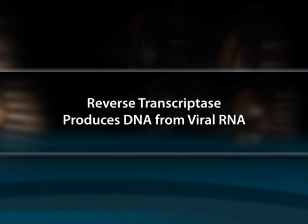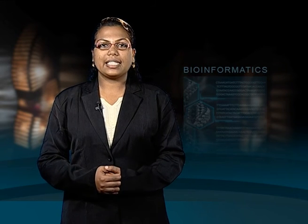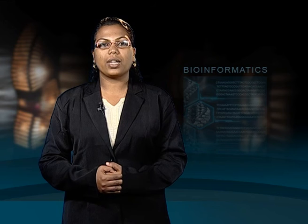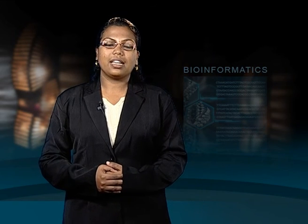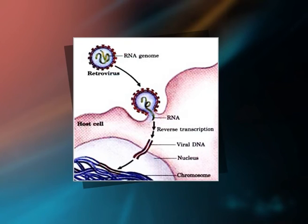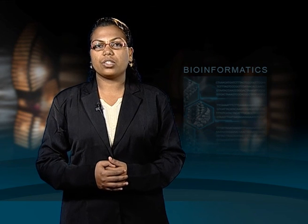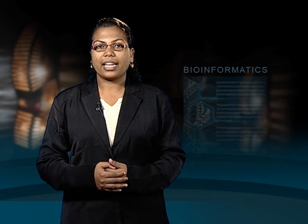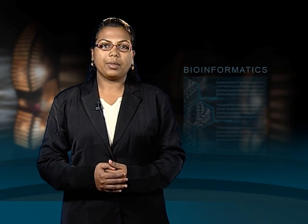Reverse transcriptase produces DNA from viral RNA. Reverse transcriptase enzyme catalyzes transcription in a reverse process of normal cellular transcription of DNA into RNA — hence the name reverse transcriptase. Certain RNA viruses that infect animal cells carry within the viral particle an RNA-dependent DNA polymerase called reverse transcriptase. On infection, the single-stranded RNA viral genome of approximately 10,000 nucleotides and the enzyme enter the host cell. The reverse transcriptase first catalyzes the synthesis of a DNA strand complementary to the viral RNA. It then degrades the RNA strand of the viral RNA-DNA hybrid and replaces it with DNA. The resulting duplex DNA often becomes incorporated into the genome of the eukaryotic host cell. These integrated viral genes can be dormant, or they can be activated and transcribed, with the gene products — viral proteins and the viral RNA genome — packaged as new viruses.